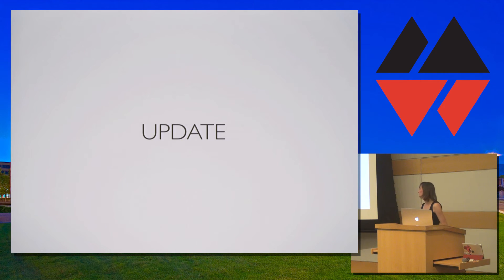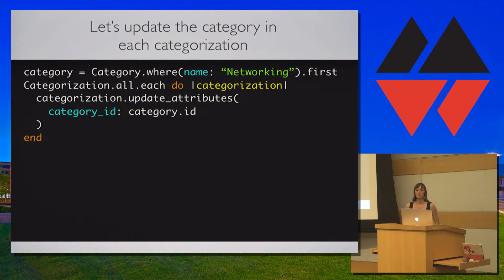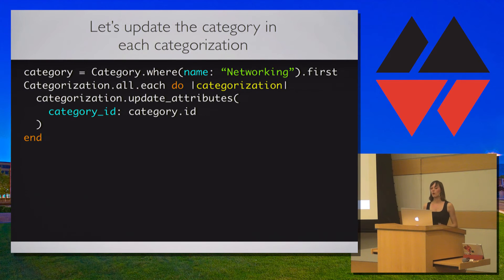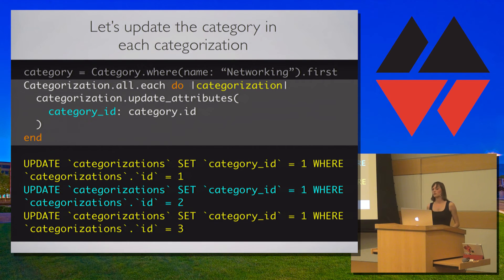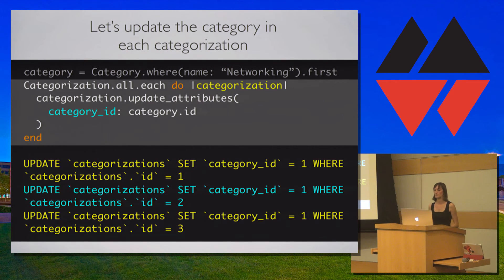Now let's look at update. Let's say we want to change all of our categorizations from the co-workers category to the network category. In this query, we are collecting all the records and updating the category_id attribute on each one using update_attributes — instantiating and updating each individual record for all 10,000 records. The following SQL will be produced individually 10,000 times: update categorizations set category_id to the new value where categorizations id is 1, then 2, 3, 4, all the way to 10,000.